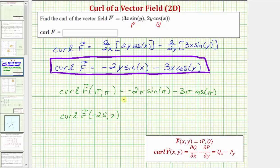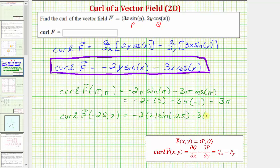Simplifying, we have negative 2π times zero, minus 3π times negative 1, which equals positive 3π. Now let's find the curl of f at (−2.5, 2), which is equal to negative 2 times 2 times sine(−2.5), minus 3 times (−2.5) times cosine 2. We determine this value to be approximately negative 0.7272.